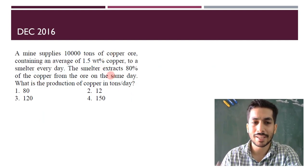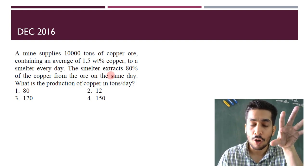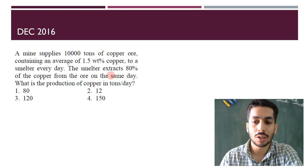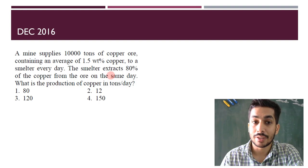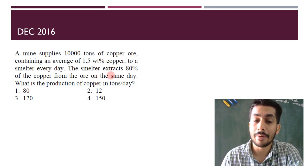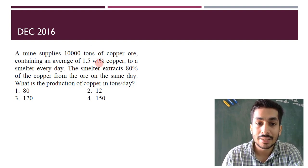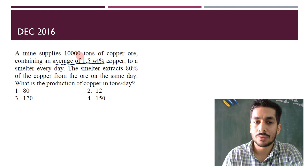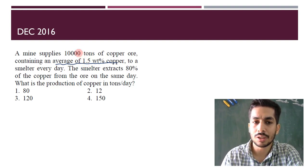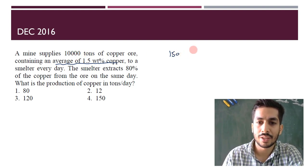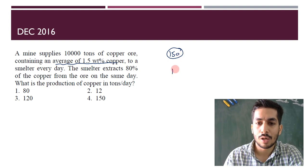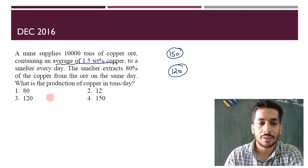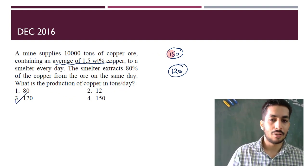Always try to attempt numerical questions because they never give you a wrong value through misinterpretation. For example: a mine supplies 10,000 tons of copper ore containing an average of 1.5% copper. They've made it easy by giving 10,000 tons. So 1.5% of 10,000 is 150 tons — that's the weight of copper. The smelter extracts 80% of the copper, so 80% of 150 is 120 tons. The production of copper in tons is 120. Super simple numerical question.